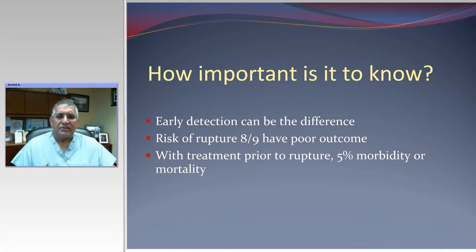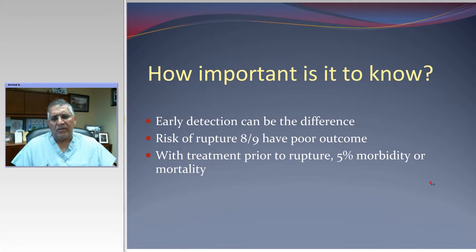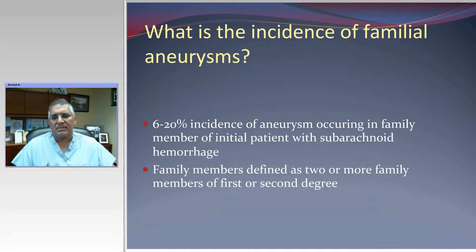So early detection can make a significant difference. The risk of rupture — eight or nine out of ten — have poor outcomes. With treatment prior to rupture, most often we can keep the morbidity and mortality to less than 5%, depending on the location and the size of the aneurysm.